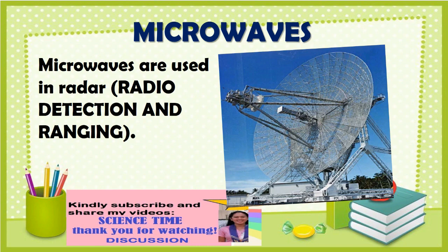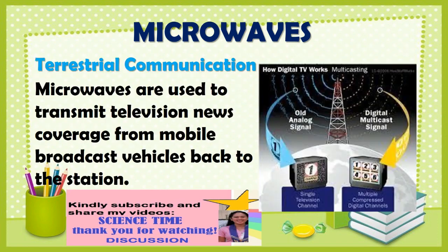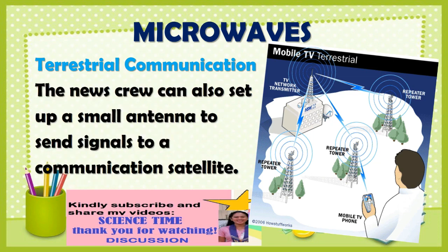Microwaves are used in radar — radio detection and ranging. A radar system consists of an antenna, transmitter, and a receiver. For terrestrial communication, microwaves are used to transmit television news coverage from mobile broadcast vehicles back to the station. The news crew can also set up a small antenna to send signals to a communications satellite.